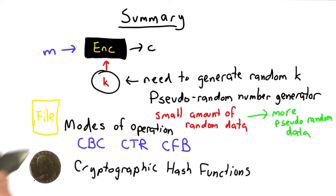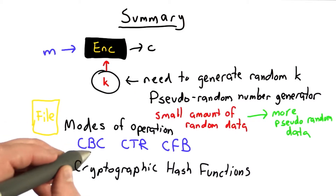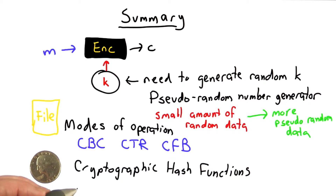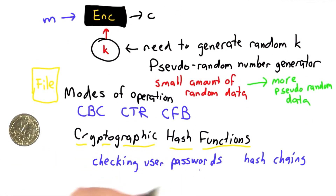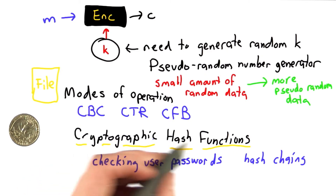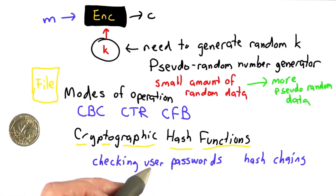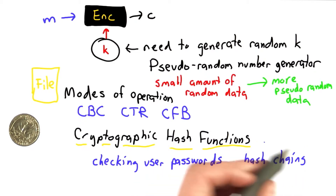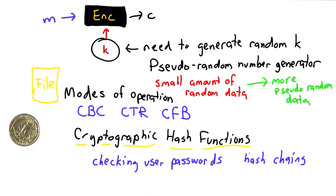We also looked at how to do fair coin tosses remotely, and that led us to the need for cryptographic hash functions. We saw how to use those to check user passwords in a way that doesn't require keeping any secrets on the server, and we also saw how to use hash chains to make it so those passwords never needed to be reused.